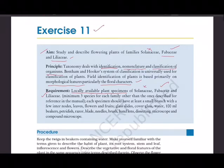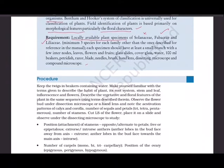Each specimen should have at least a small branch with internodes, leaves, flowers, and fruits. You'll need glass slides, cover glass, water, beakers, petri dish, razor blade, needles, brush, hand lens, dissecting and compound microscopes. The morphology part you can study at home.